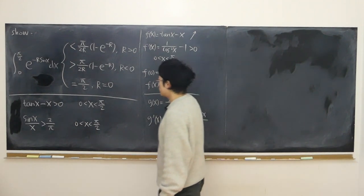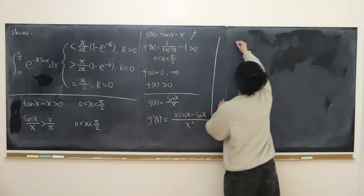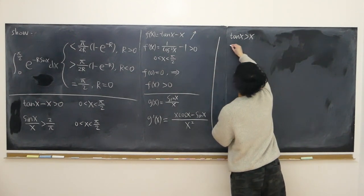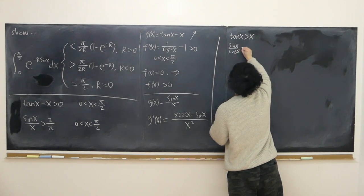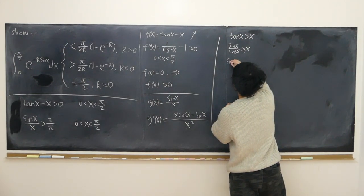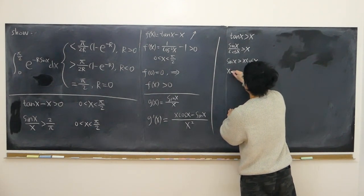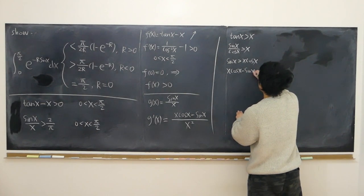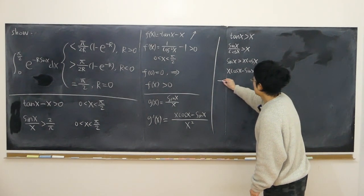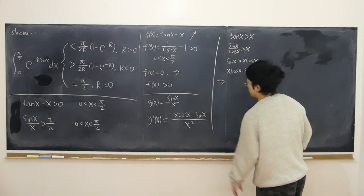I've shown that the first lemma is true: tangent x minus x is always positive. In other words, tangent x is larger than x in this open interval. That is, sine x over cosine x is larger than x. Since in this open interval the bottom is always positive, I can say sine x is always larger than x times cosine x. Then moving sine x over to the other side: x cosine x minus sine x is always negative in this open interval. Therefore my numerator is negative and the denominator is always positive, so my overall fraction g'(x) is negative.